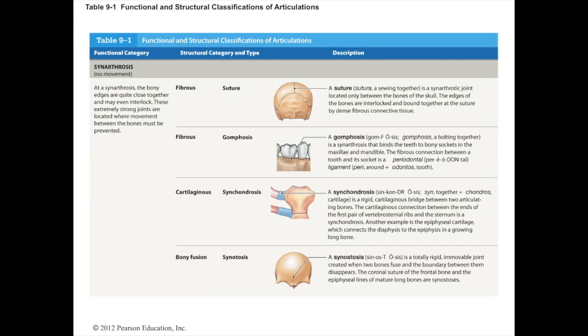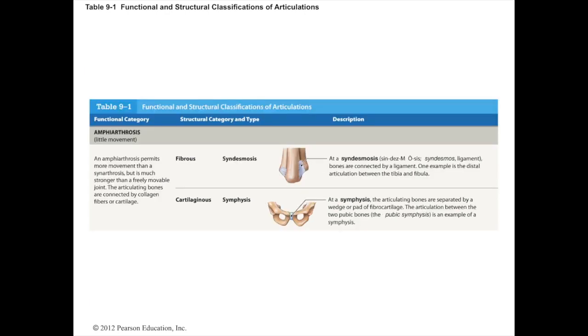These pictures define different types of structures. For example, you have fibrous — a suture would be a great example, which we learned. A gomphosis is your gums. Synchondrosis is basically when cartilage holds two bones in a tight junction. Synostosis is basically a very rigid, almost immovable joint. Syndesmosis is when the bones are connected by a ligament — parts of the tibia and fibula are an example at the elbow joint. A symphysis is a union of two different bones connected by fibrocartilage — the best example is the pubic symphysis of the groin.